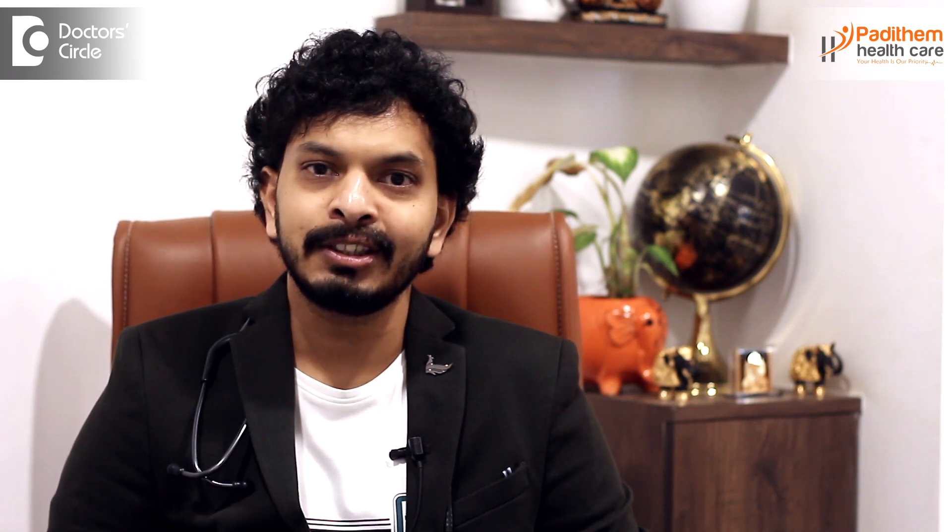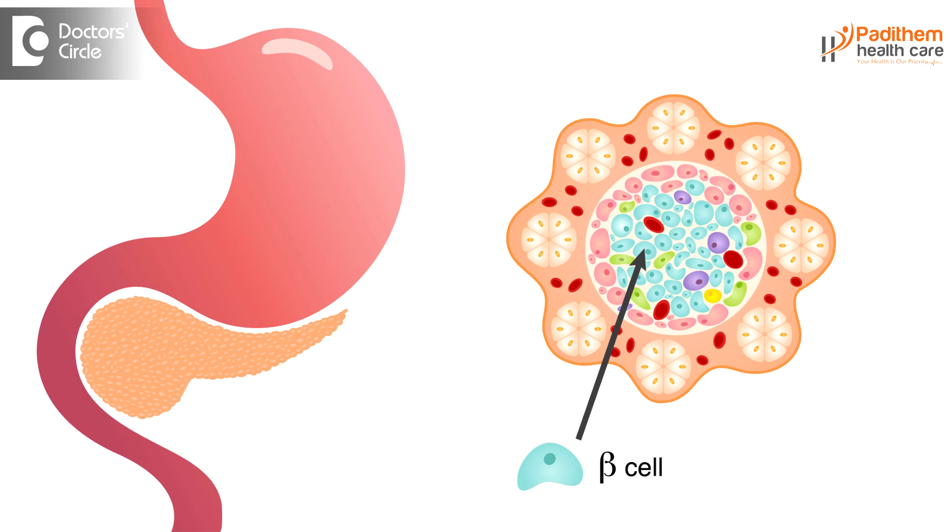So what are these beta cells and pancreas? Beta cells are mainly present in the pancreas and they help in producing insulin. Insulin is a hormone which mainly helps in the digestion of glucose. Whatever food we eat gets converted into glucose, which then enters the cells. The cells utilize this glucose and it forms energy for our daily regular activities.